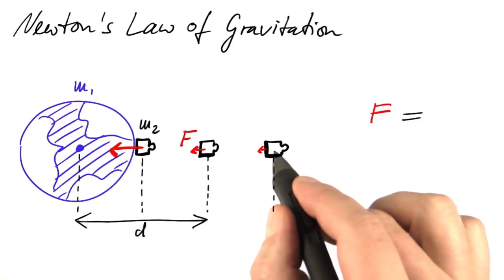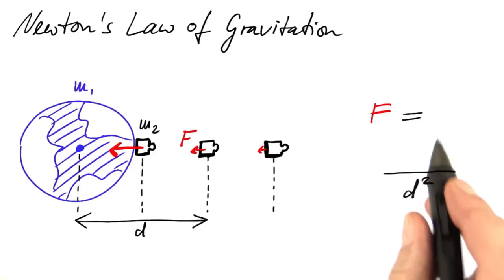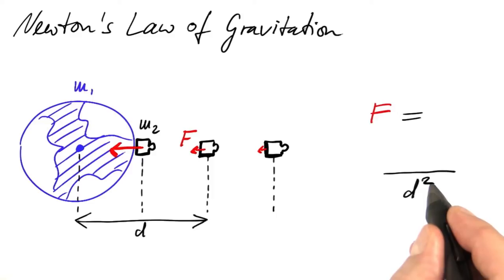If we triple the distance, the force goes down to one-ninth, which means that in our equation for the force of gravity, we have to have a distance squared in the denominator.